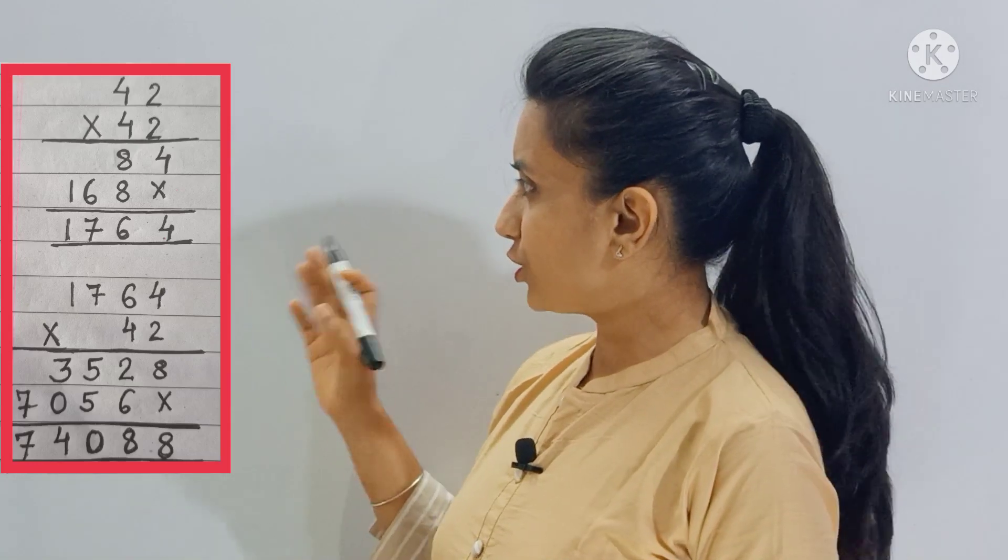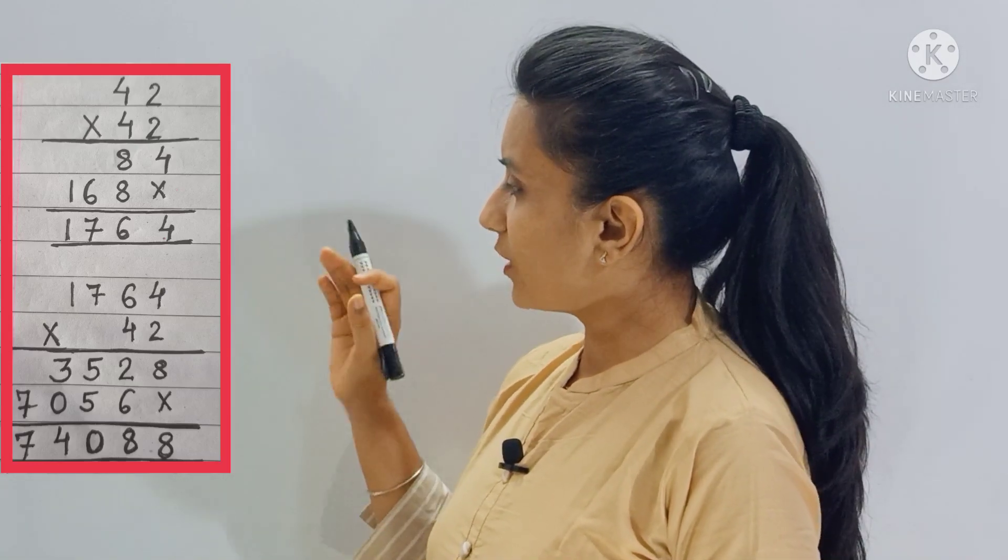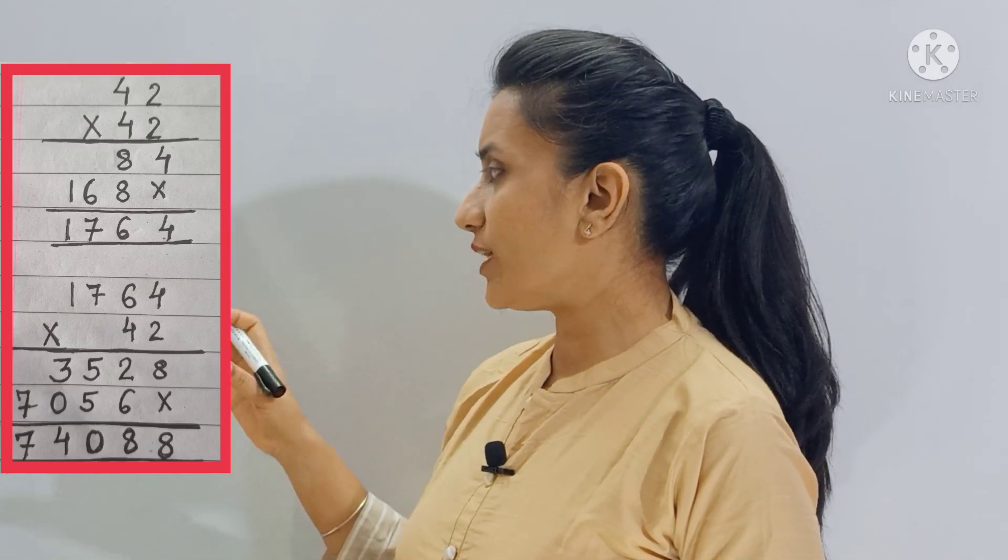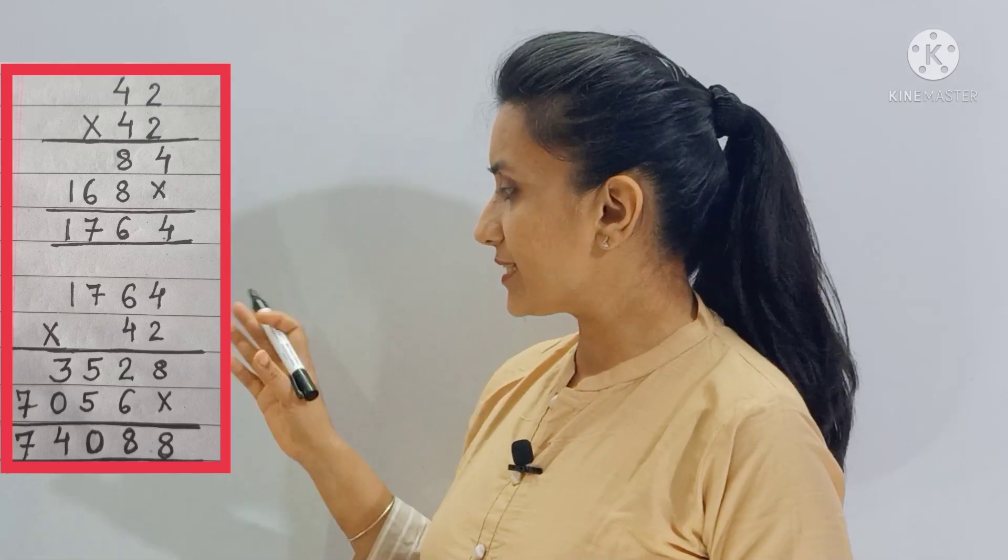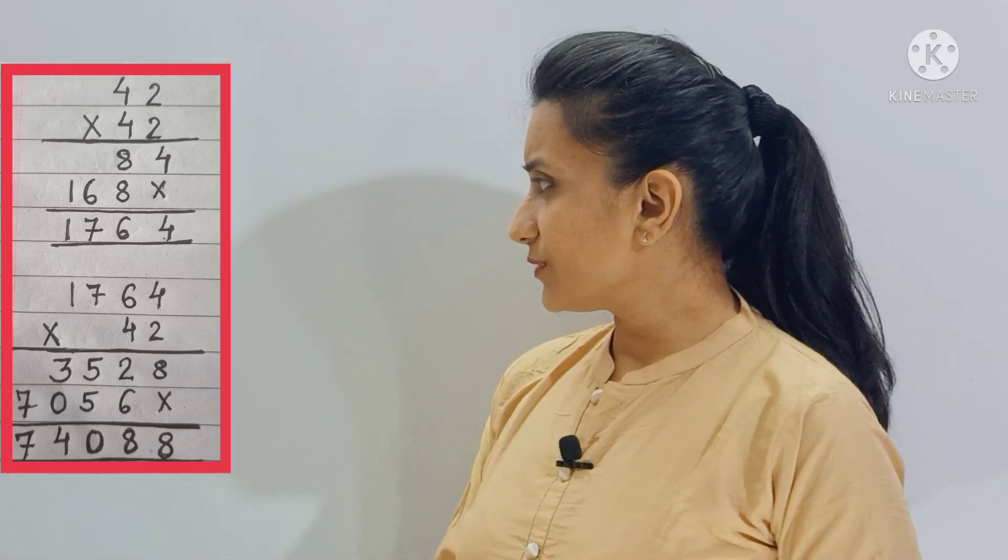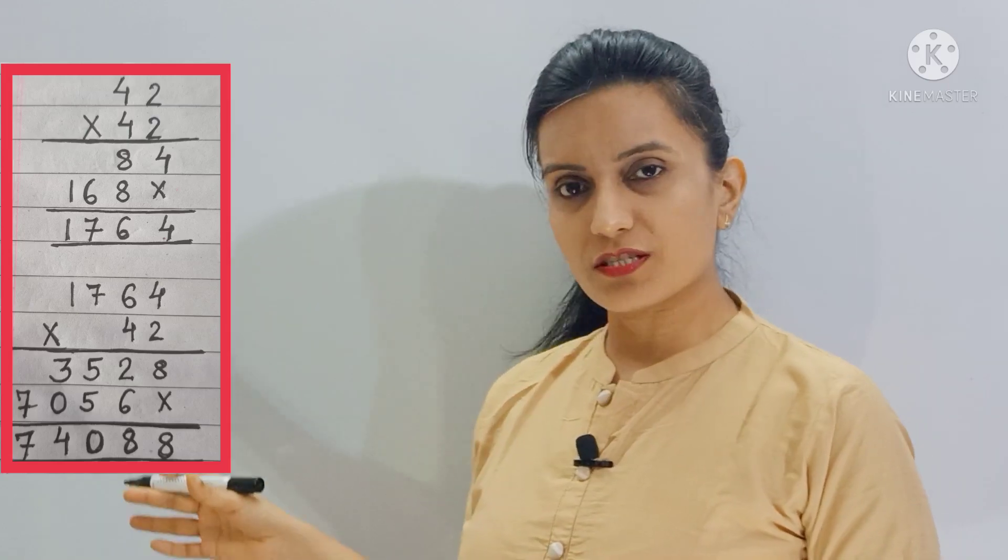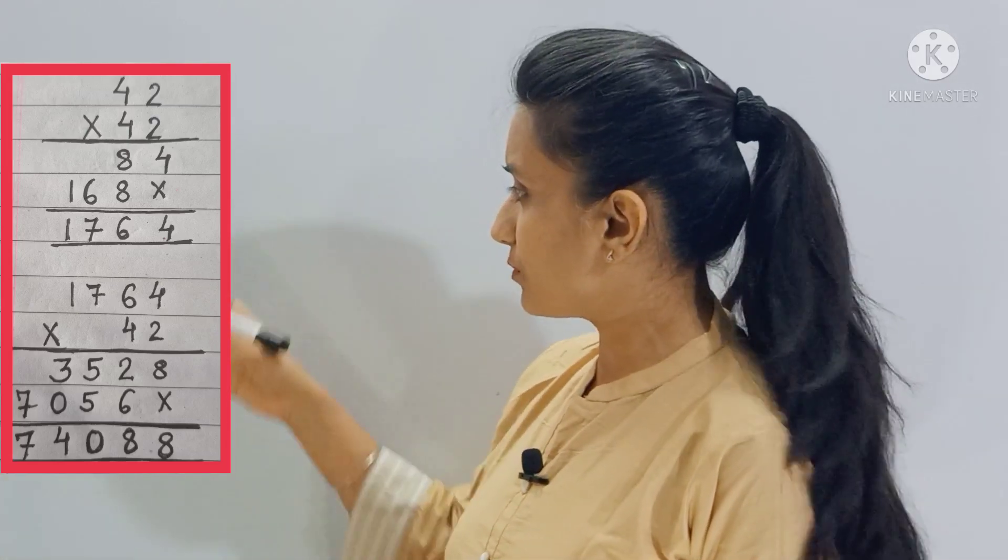You will multiply 42 by itself, then whatever answer you get, you will again multiply that answer by 42. Now you can see how much calculation is involved here, right? And you're reading the table so many times.